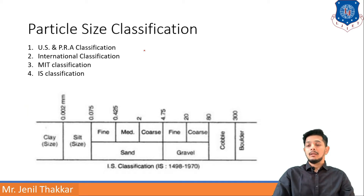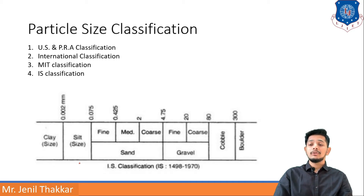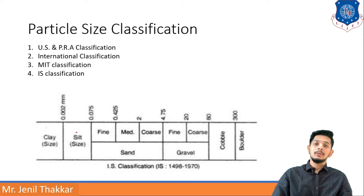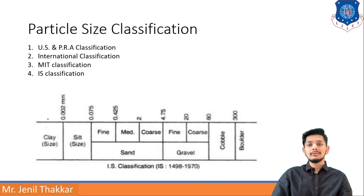Here you can see a chart showing particle sizes from 0.02 mm to 300 mm and more. This shows the different classes of particles according to their sizes. If the soil particle size is less than 0.02 mm, the soil is classified as clay. If it is in the range of 0.02 mm to 0.075 mm, it will be silt.